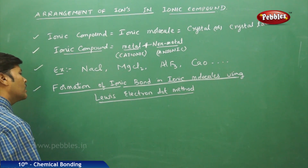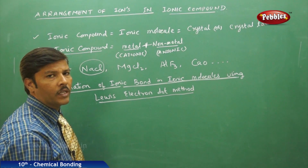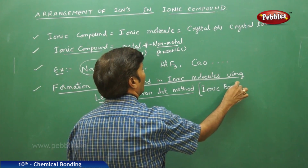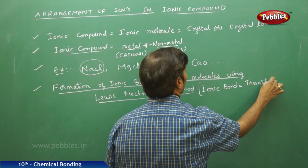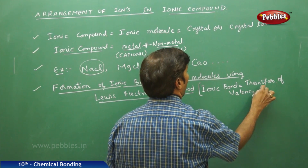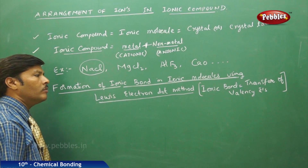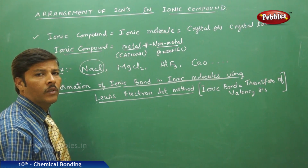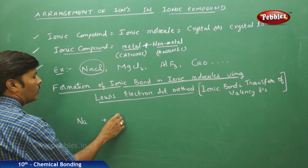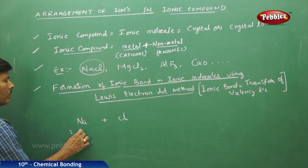Taking sodium chloride as an example: one of the most important properties in the formation of an ionic bond in ionic molecules is that an ionic bond is always formed because of the transfer of valence electrons between two atoms. If there is a transfer of valence electrons between two atoms, then that bond results in the formation of an ionic bond.